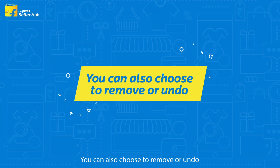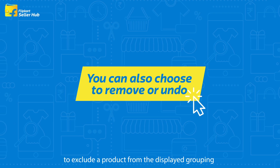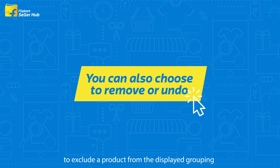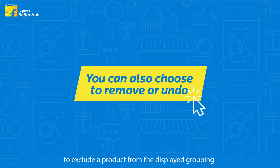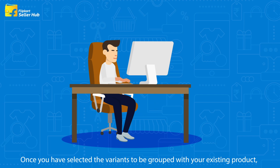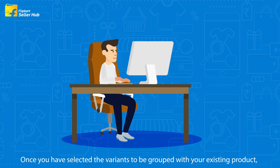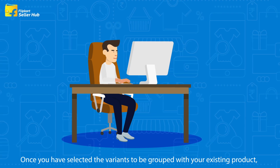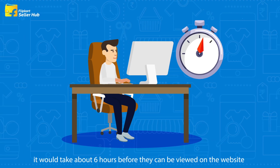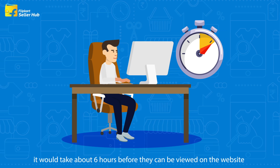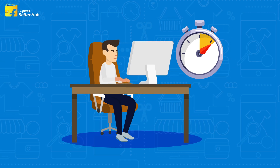You can also choose to Remove or Undo to exclude a product from the displayed grouping. Once you have selected the variants to be grouped with your existing product, it will take about 6 hours before they can be viewed on the website.